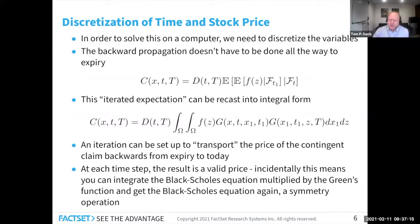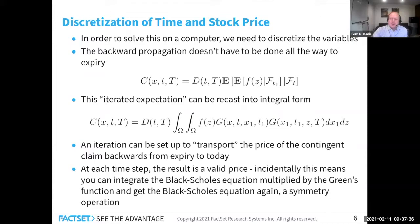What's interesting, and I don't know if it's widely appreciated, is that if you take the Black-Scholes equation, multiply it by the Green's function, and do the integral, you get the Black-Scholes equation again — this is a symmetry operation of the Black-Scholes equation. And if you stare at the middle equation long enough and compare it to the earlier equation at the bottom of the slide, we see one Green's function versus two.